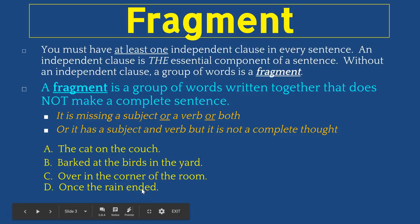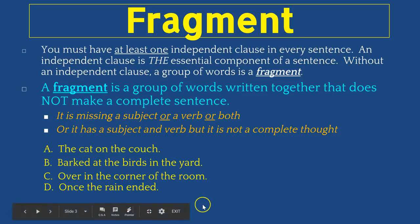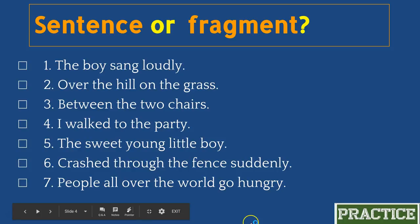Finally, letter D: 'once the rain ended.' Here we have our subject 'rain' and our verb 'ended,' but we don't have a complete thought. I'm left wondering — once the rain ended, what? I walked to school? I went to my friend's house? I played outside? What happened once the rain ended? So it is also a sentence fragment. Let's practice.